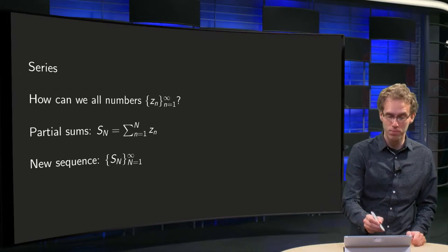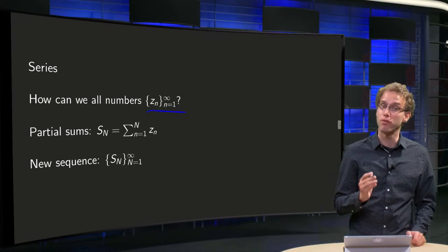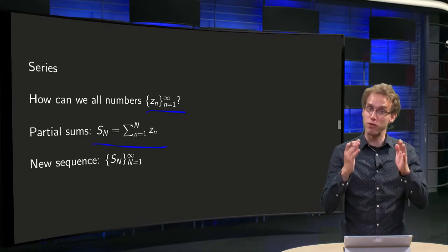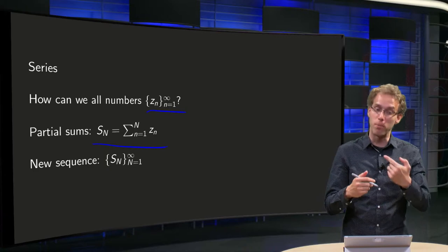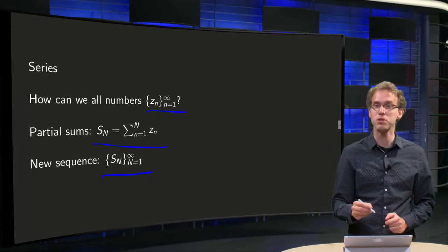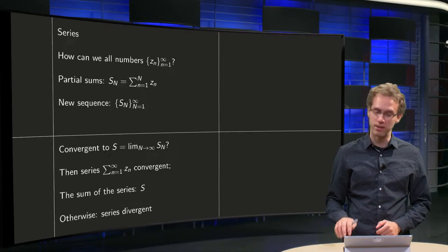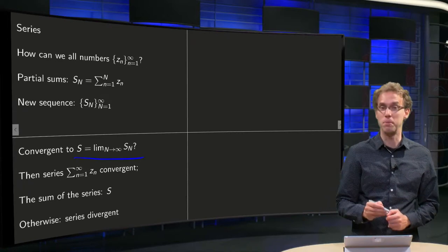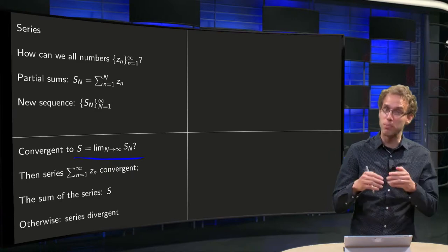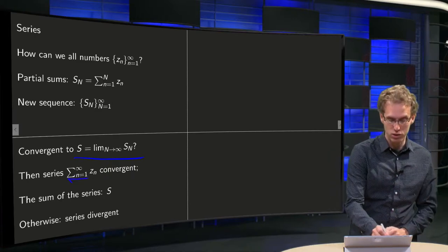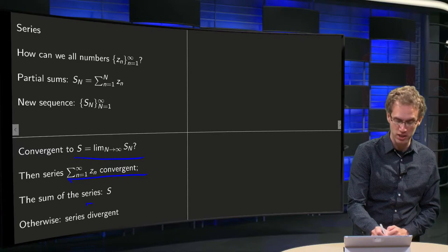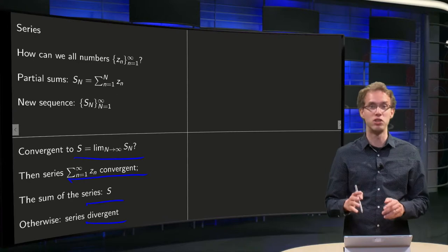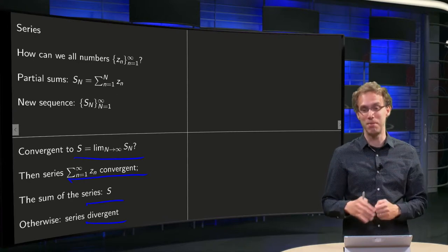So how can we add all numbers from a sequence? We define the partial sums S_N, where we add the first N terms, forming a new sequence of partial sums, as we did in the real case. If this new sequence converges to a limit S, then the series sum from N=1 to infinity is called convergent with sum S, and if this limit does not exist, the series is called divergent. This goes exactly the same as in the real case.